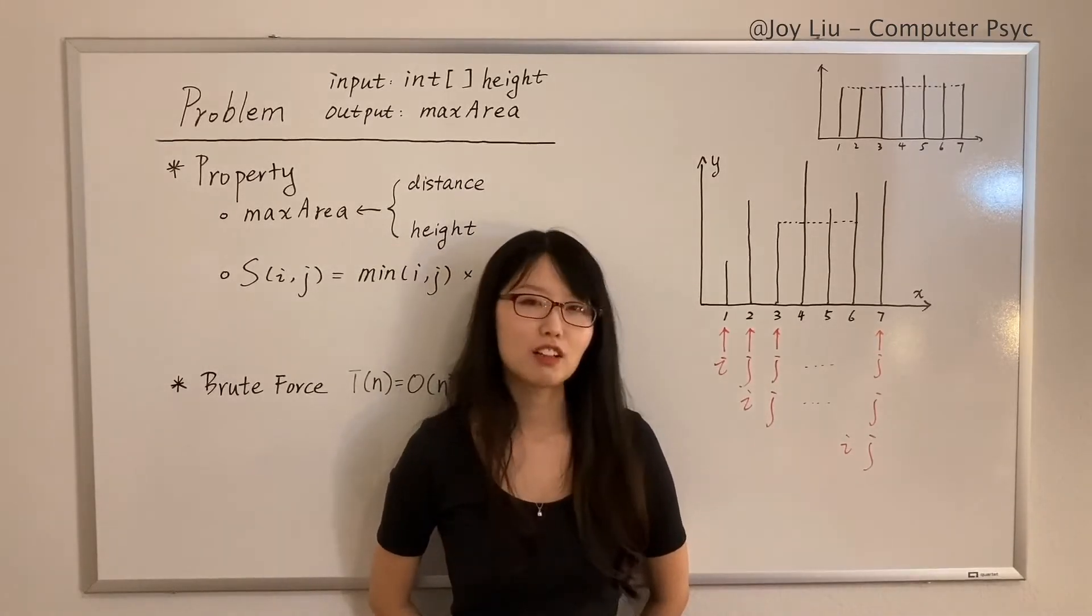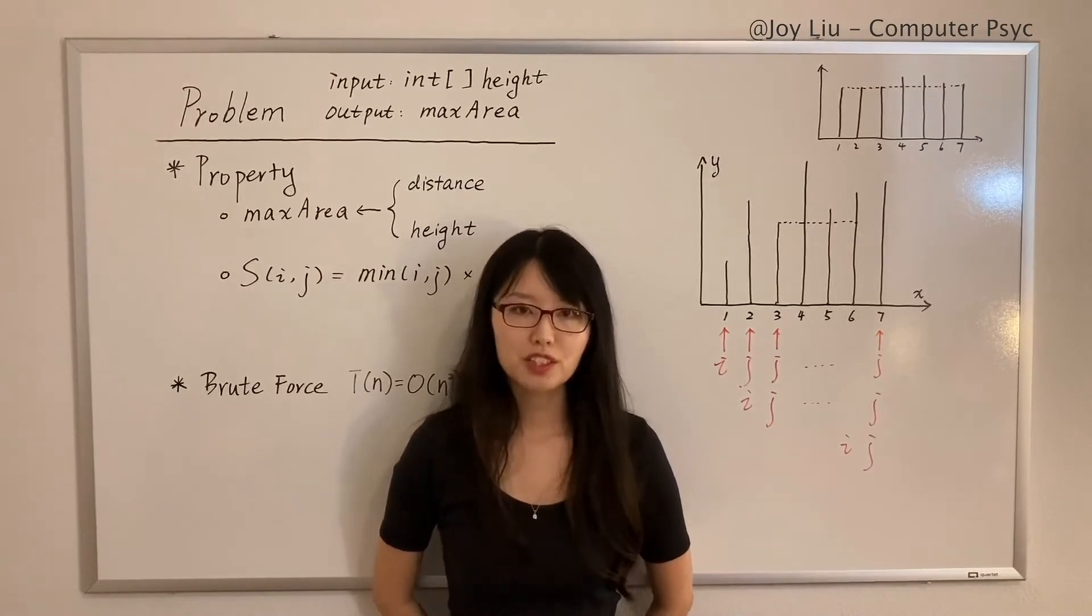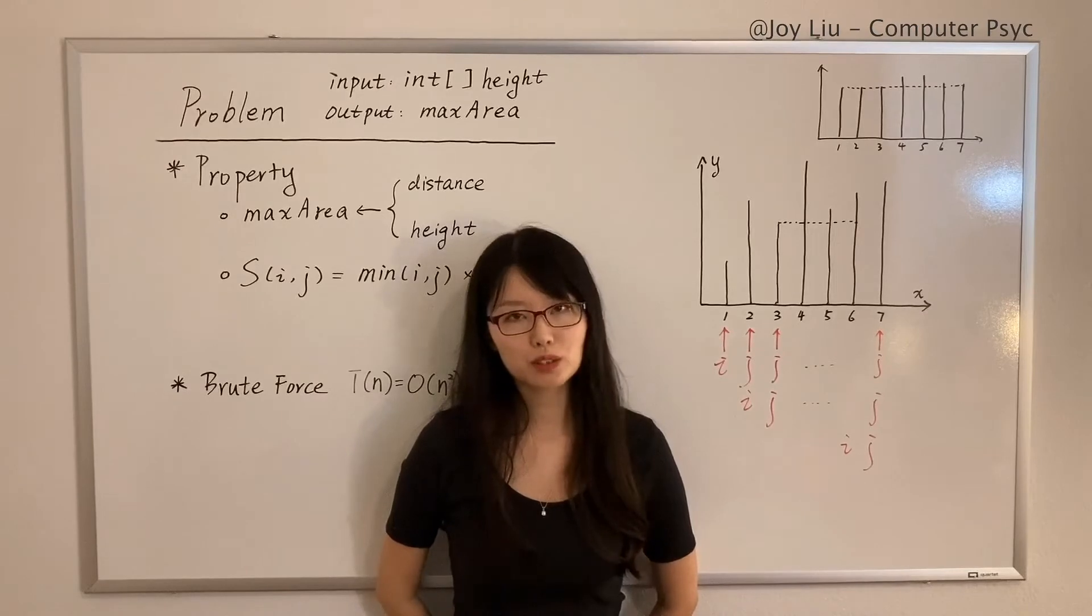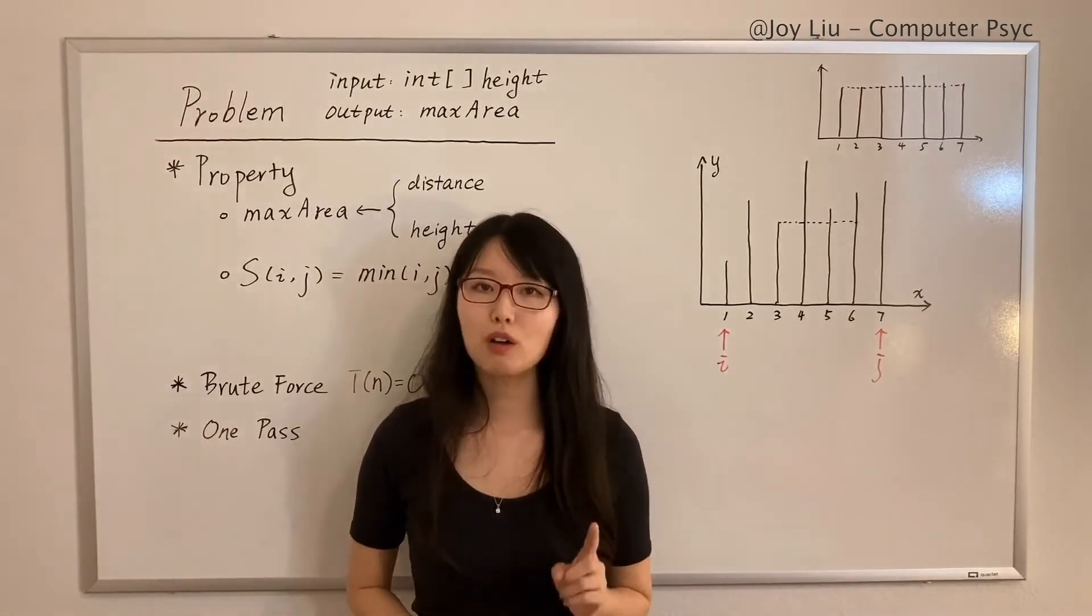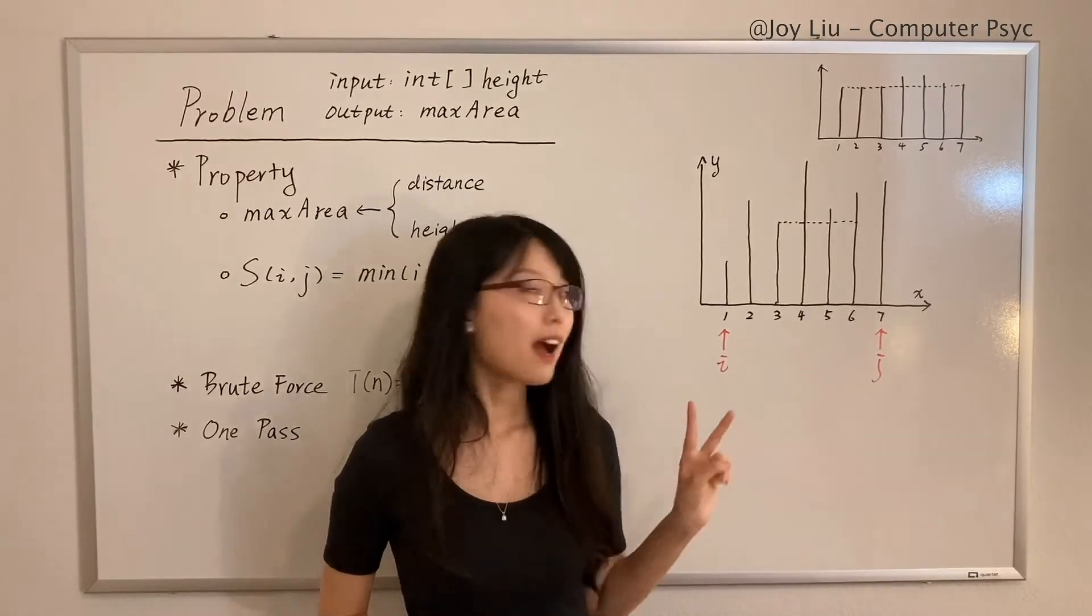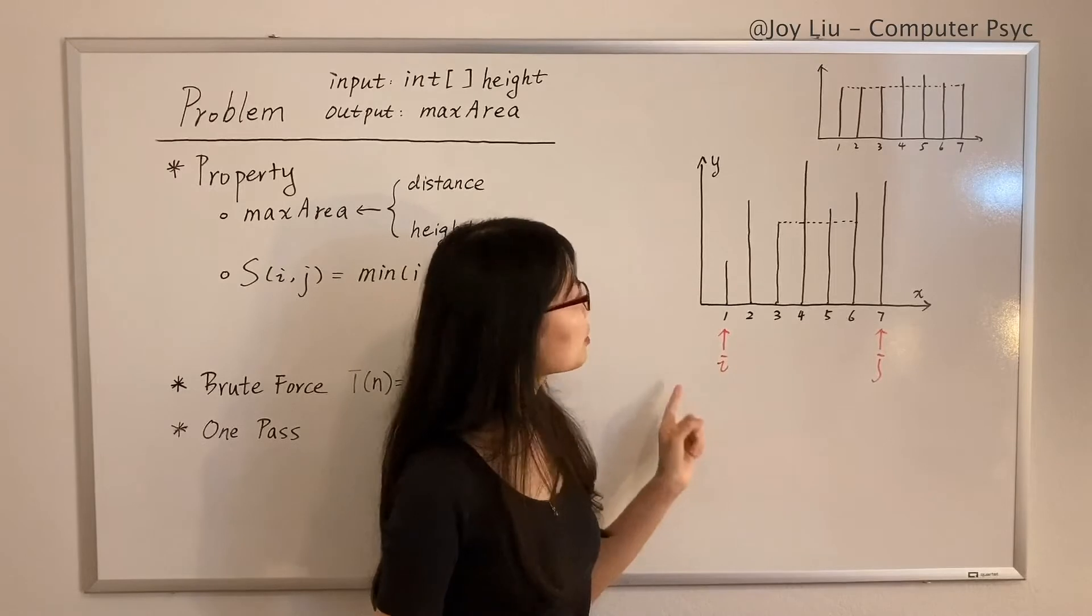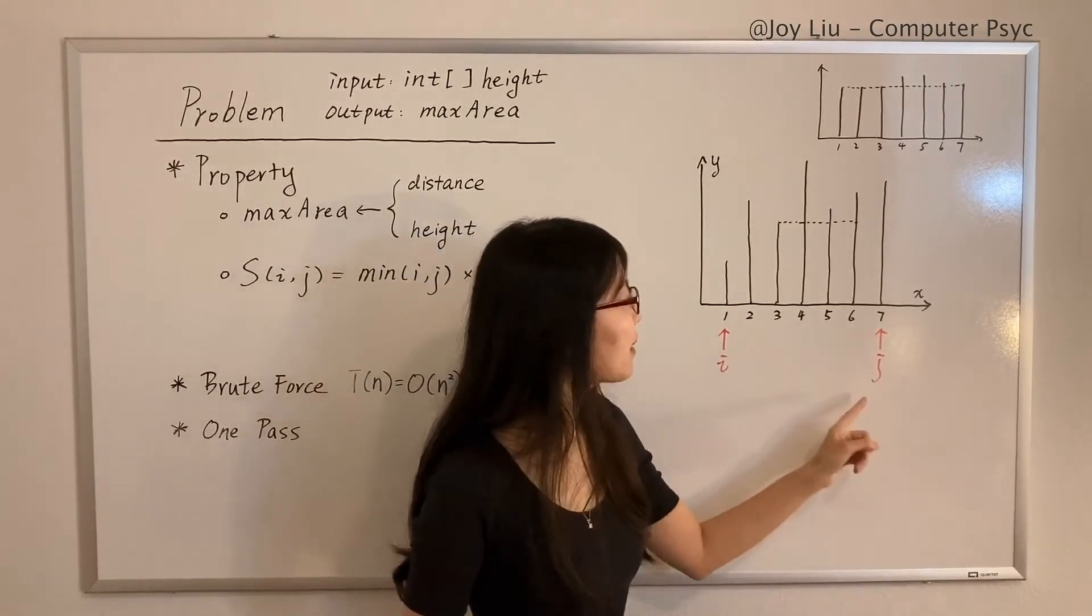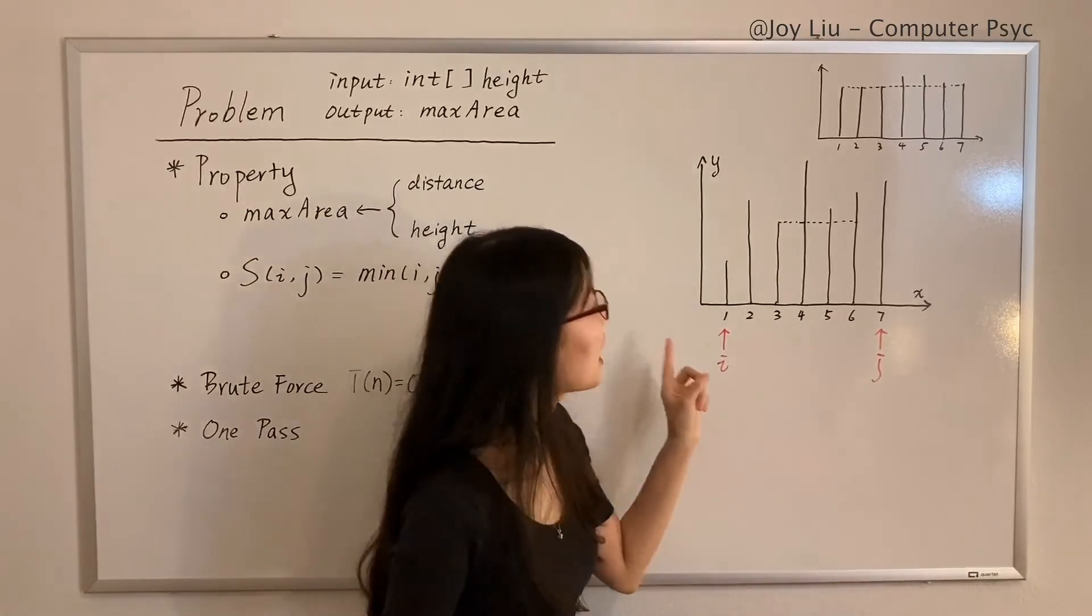Actually, we calculate a lot of containers that are not necessary. I'll review the solution and then walk you through this solution people call one-pass. In this solution, we also use two pointers, i and j. i starts from the first one, but this time j starts from the end—the last one.